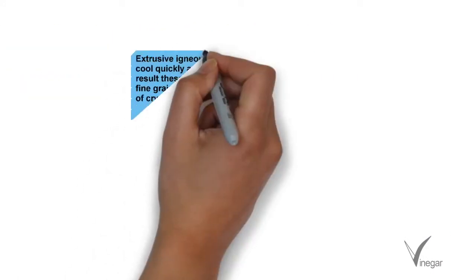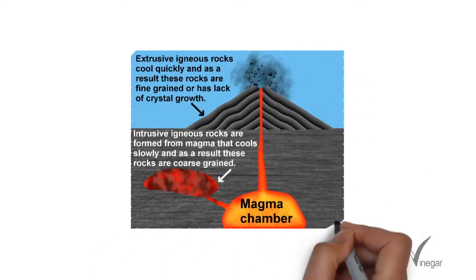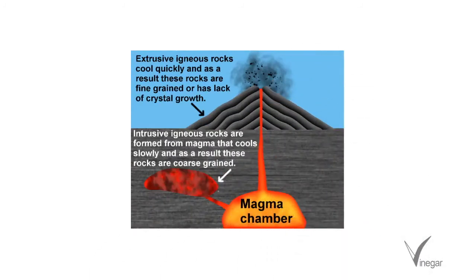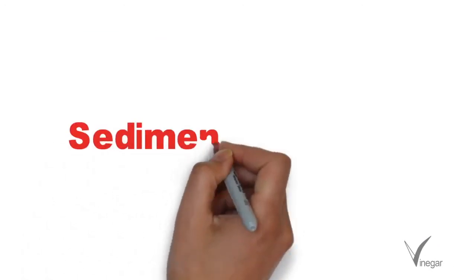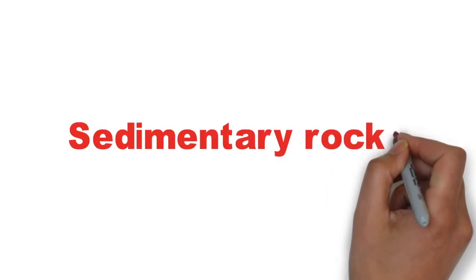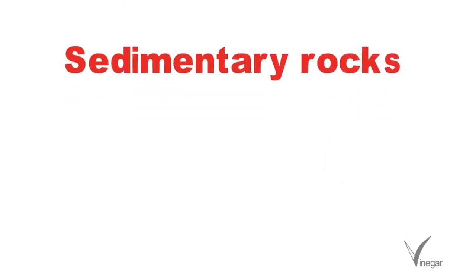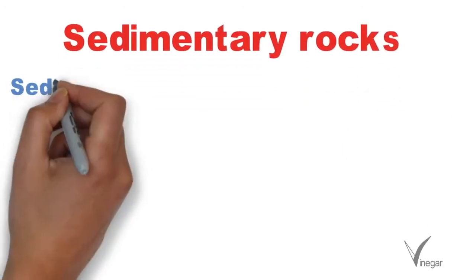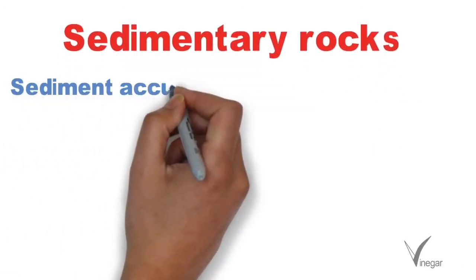Volcanic rocks also form lava floors, lava sheets, and lava plateaus — examples being the Deccan Plateau in India and Antrim in Northern Ireland. Mostly igneous rocks are very hard and resistant, which is why they are used in road making, monument making, etc.